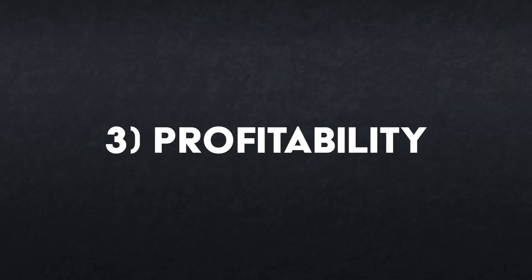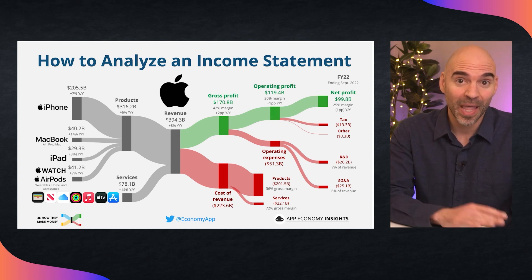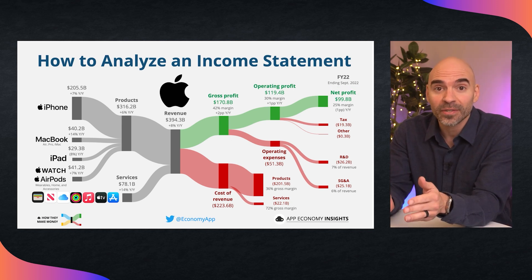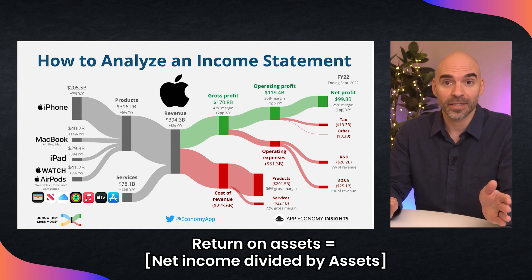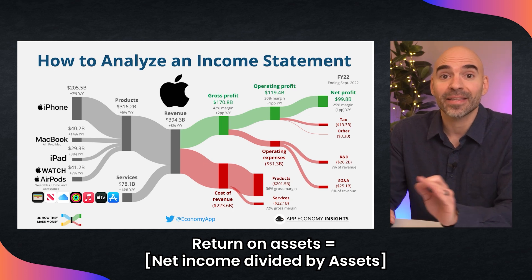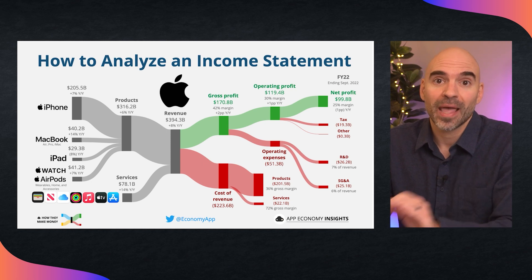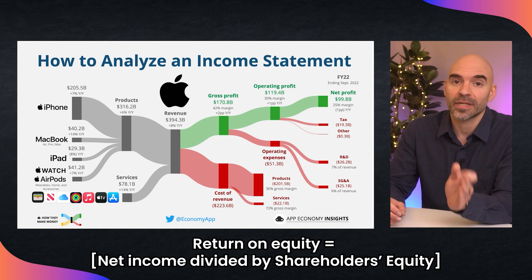The third trait to look for is profitability. Isn't the profitability of the company in the P&L? That's right — but there are two metrics to put profitability in context with the balance sheet. We go back to the income statement and use the net profit or net income the company has made for the period. We can use it for two specific ratios. First, return on assets: calculated by dividing net income from the P&L by assets — it shows how efficiently assets are used to generate profit. Second, return on equity: calculated by dividing net income by shareholders' equity — it shows management's efficiency using invested capital.